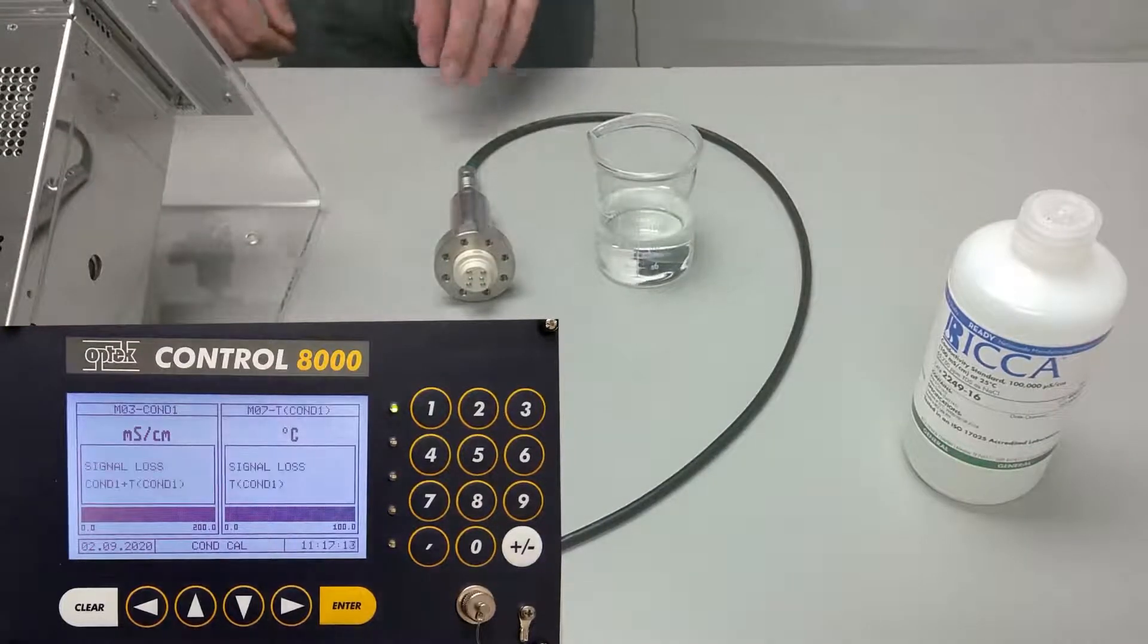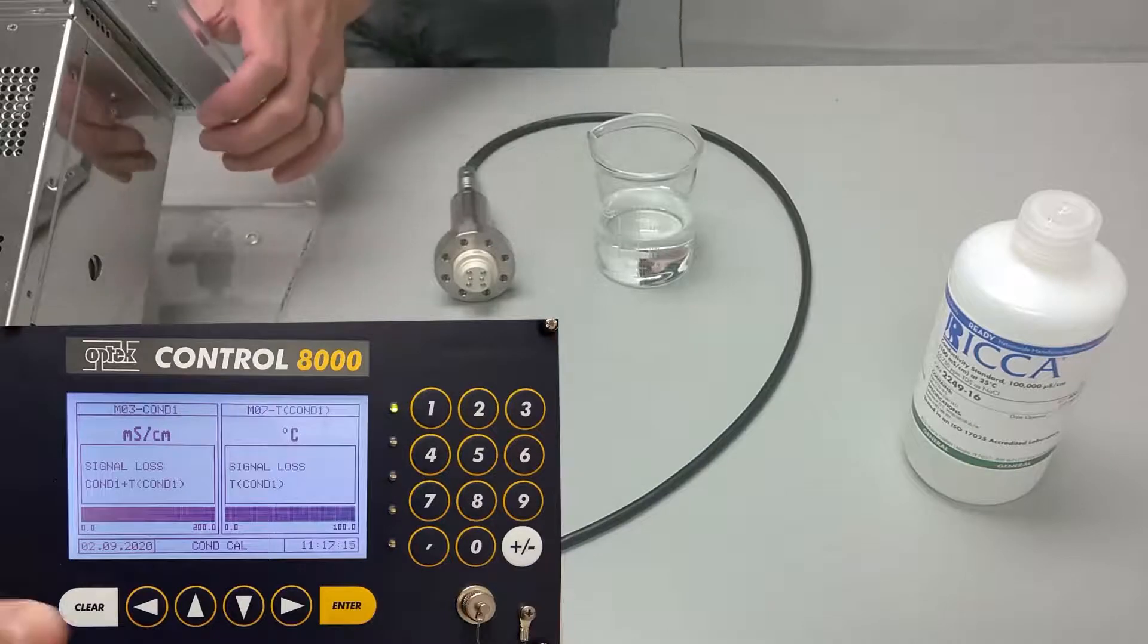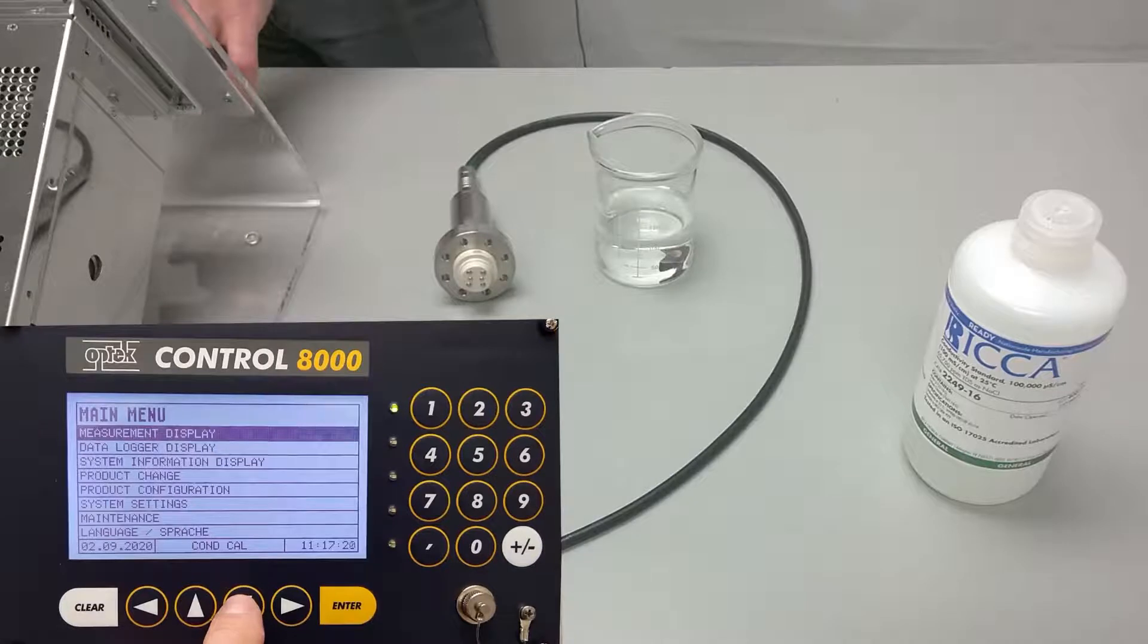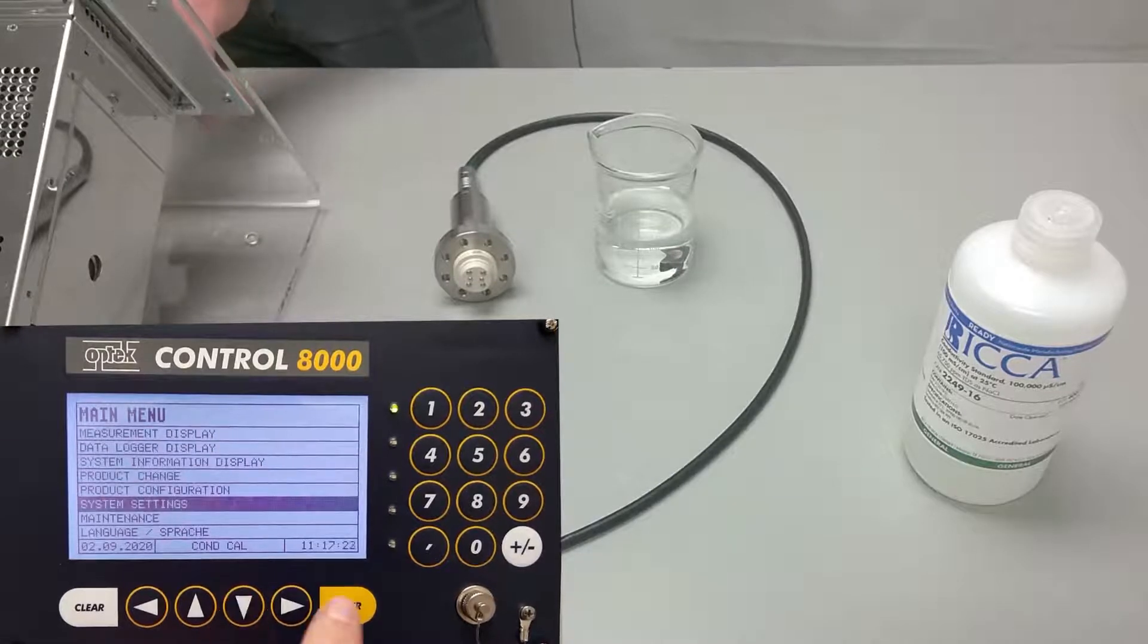The first step is to ensure that the conductivity sensor and temperature RTD probe are set to active. We'll press clear to get to the main menu and scroll down to system settings.